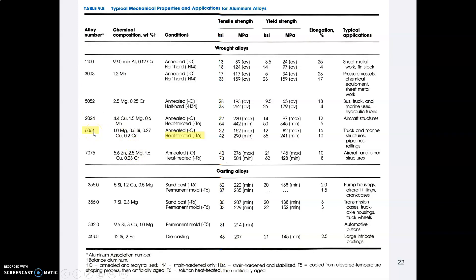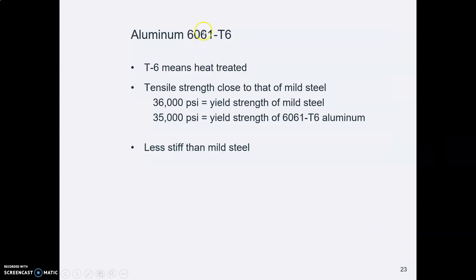So, let's look at this one common grade of aluminum, 6061. 6061 is a common aluminum, and often you see 6061-T6. T6 means it was heat treated.